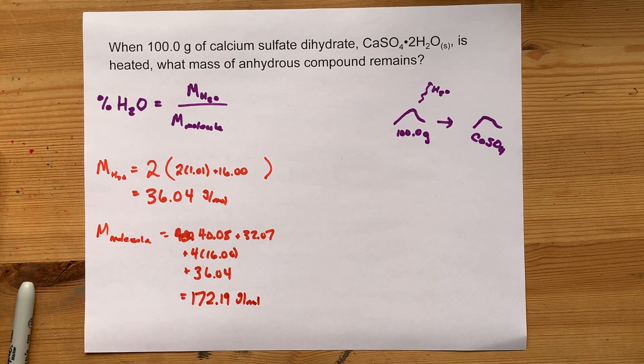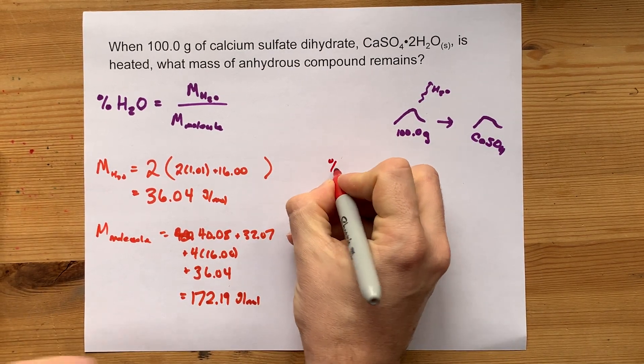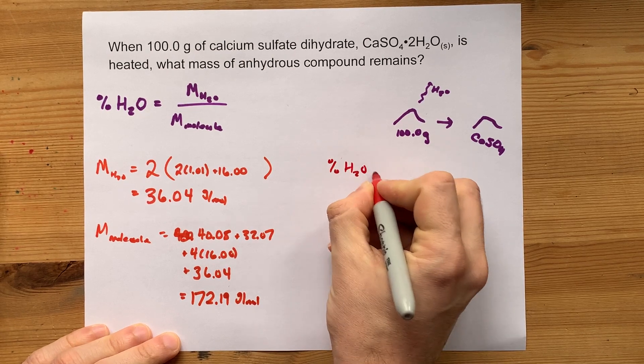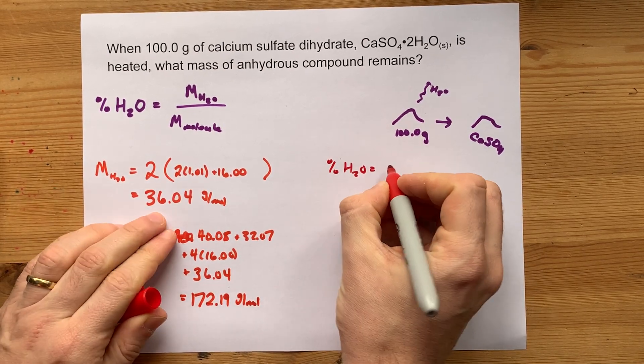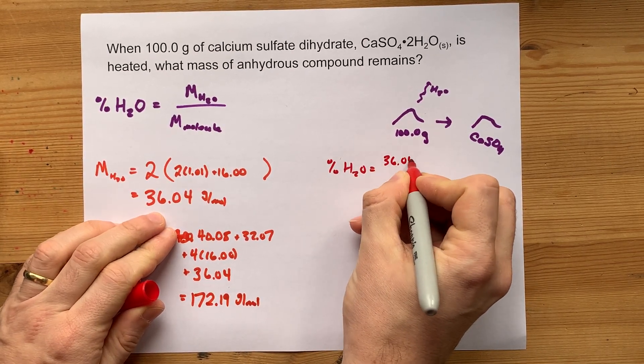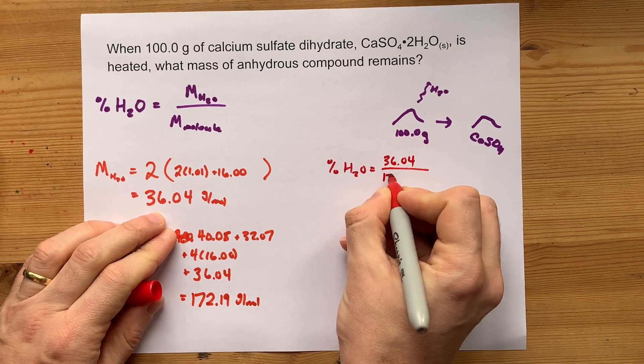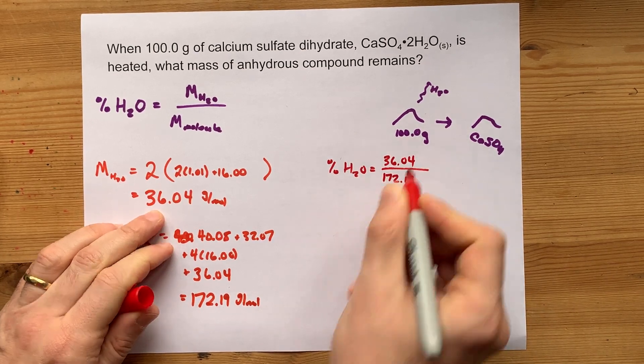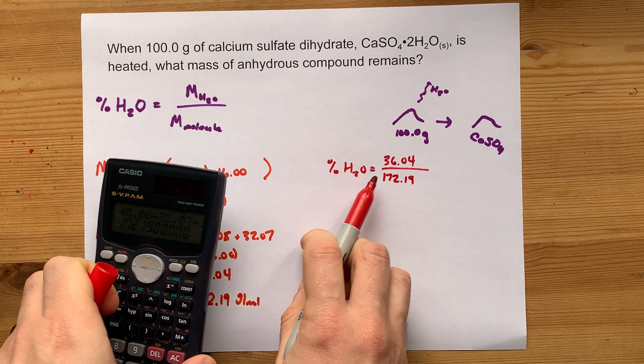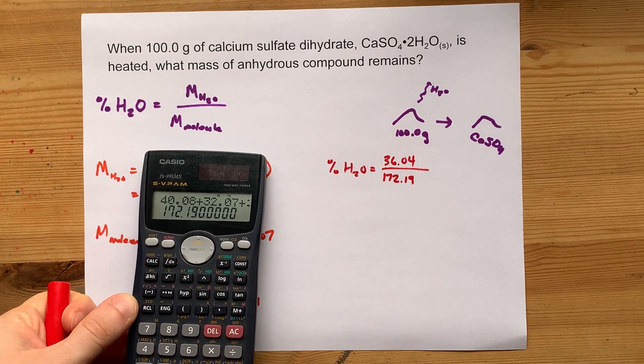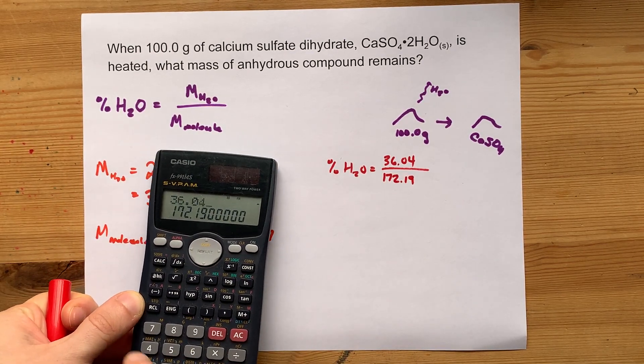What that means is that my percent by mass of water in this compound is 36.04 out of the total 172.19. You can see we're doing just the water out of the entire molecule. We're going to get some fraction here.